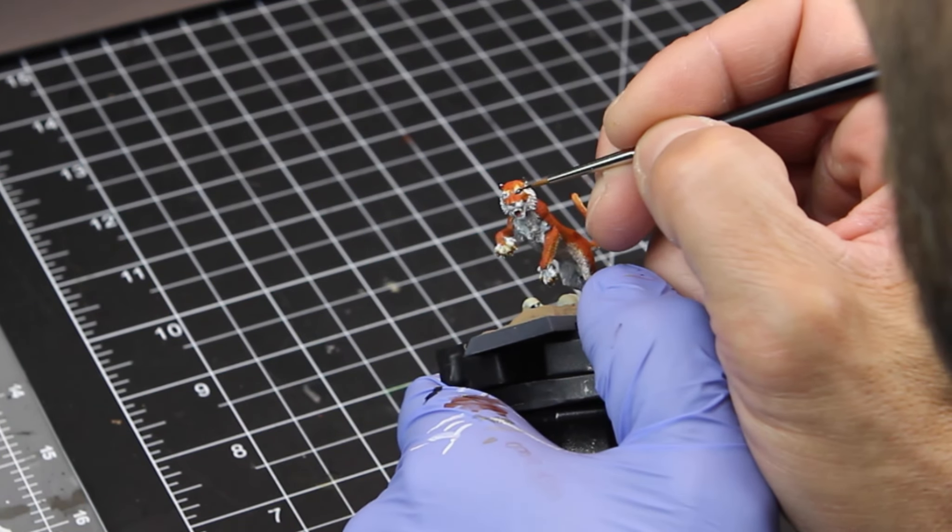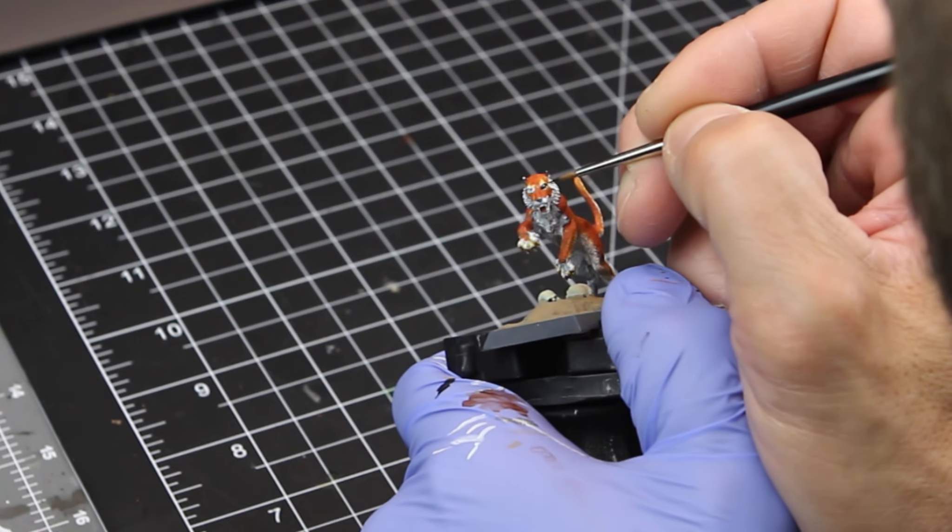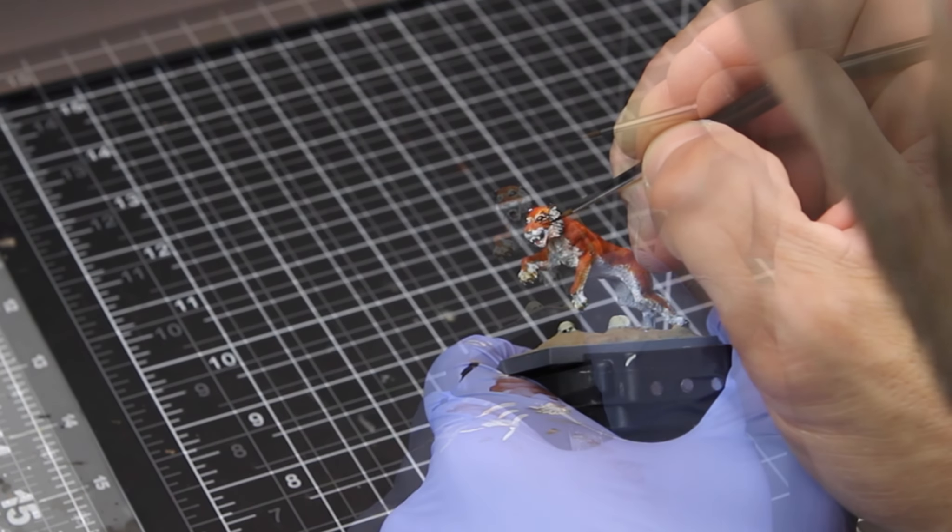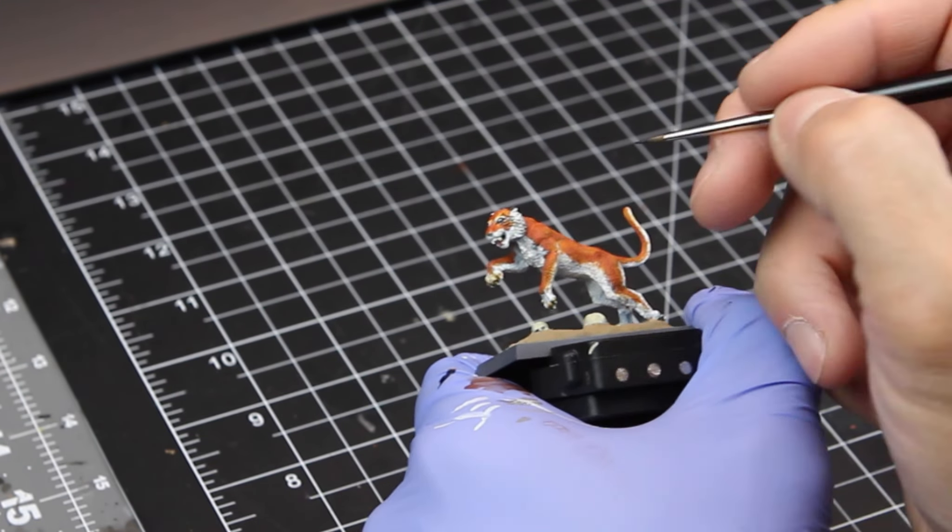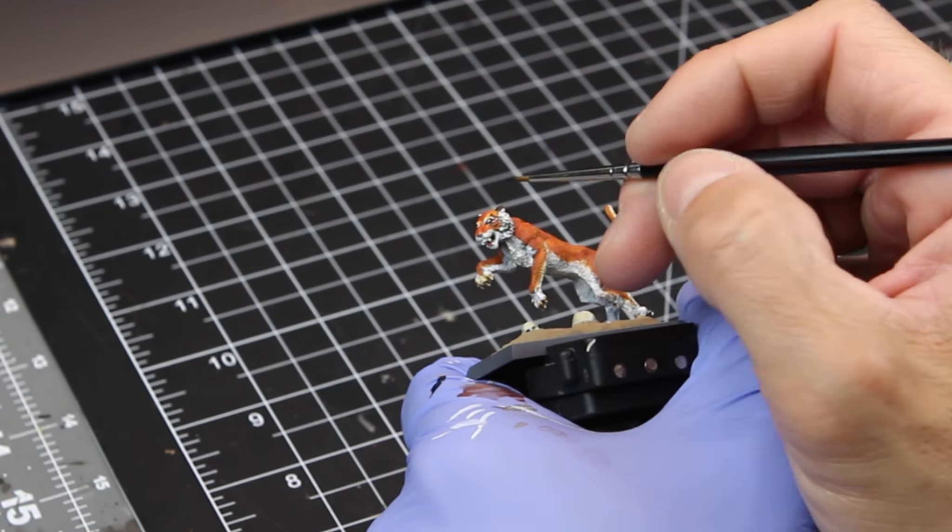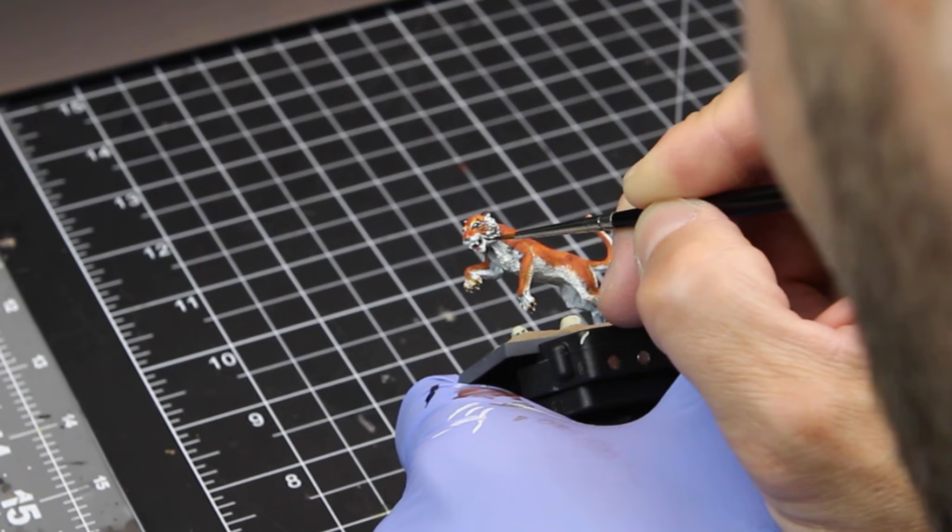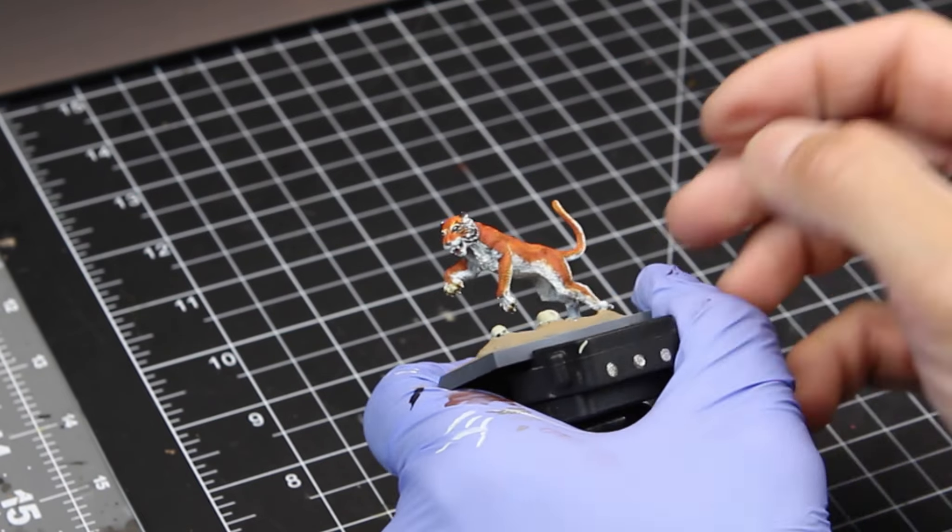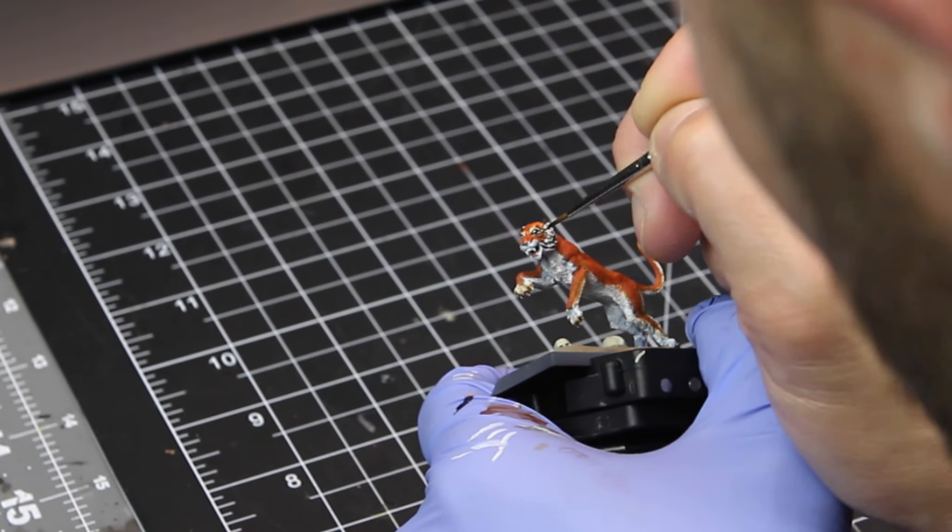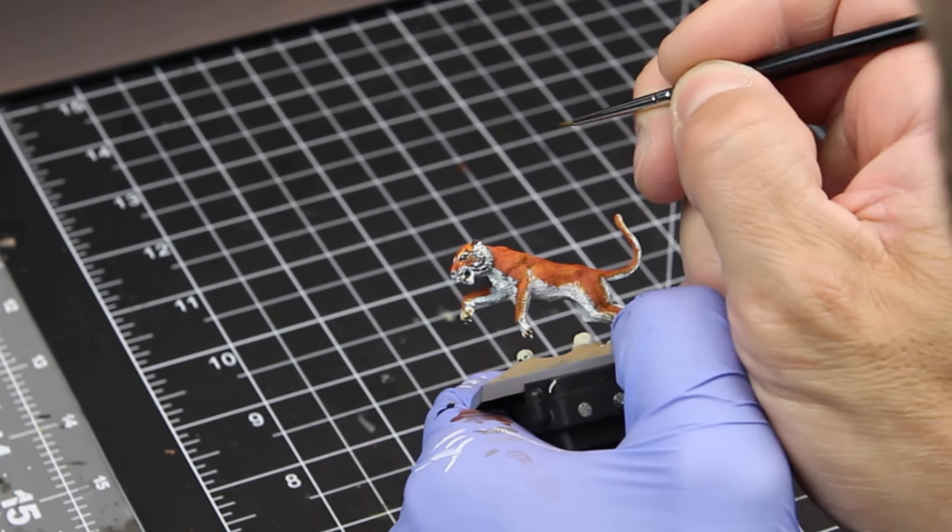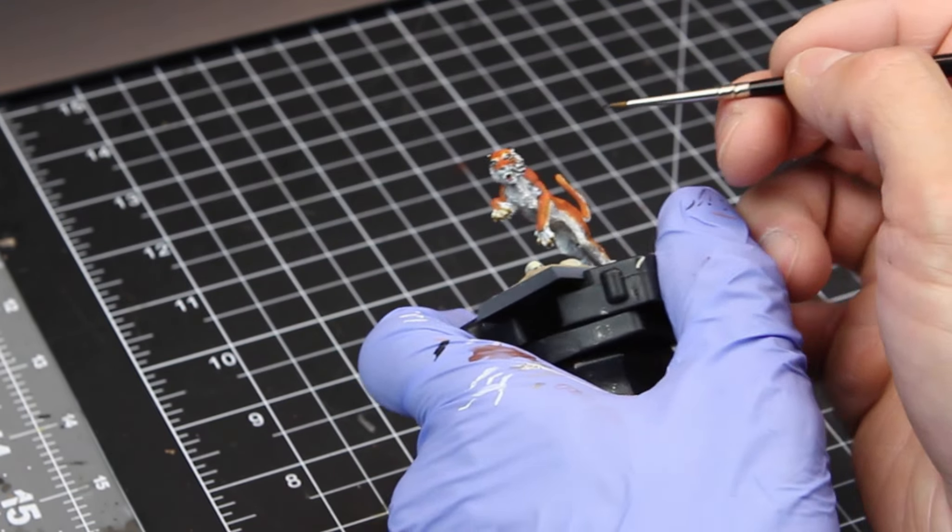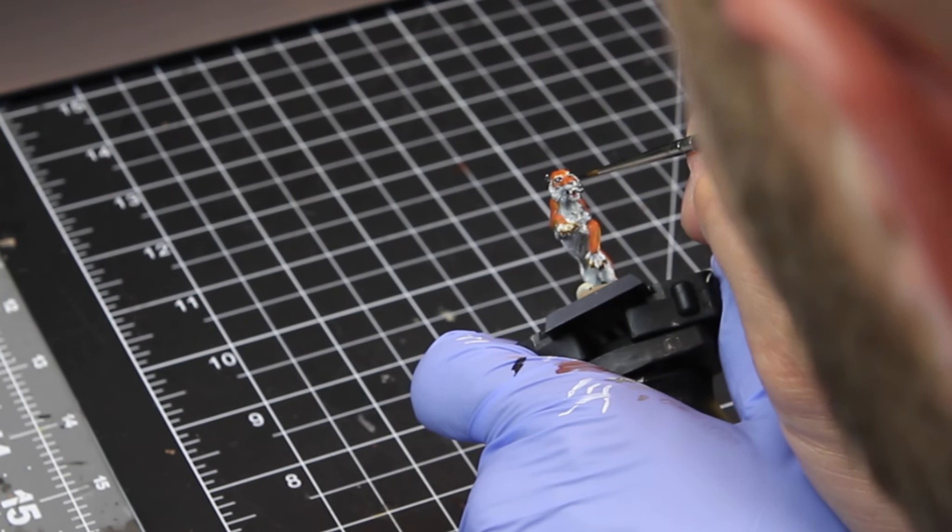So we thinned down the paint with the flow aid. And in this case, it's just a very small amount of flow aid. You just really have to practice with it until you find the right mix. But you can see how I can do the eyes. I can start doing the stripes here. I can do some detail around the mouth and the nose with the paint thinned down this way. And it doesn't glob up on the miniature. Because if we went straight from the pot or from the bottle, you'd lose all that detail. And it would be really hard to get this kind of detail without using the flow aid.